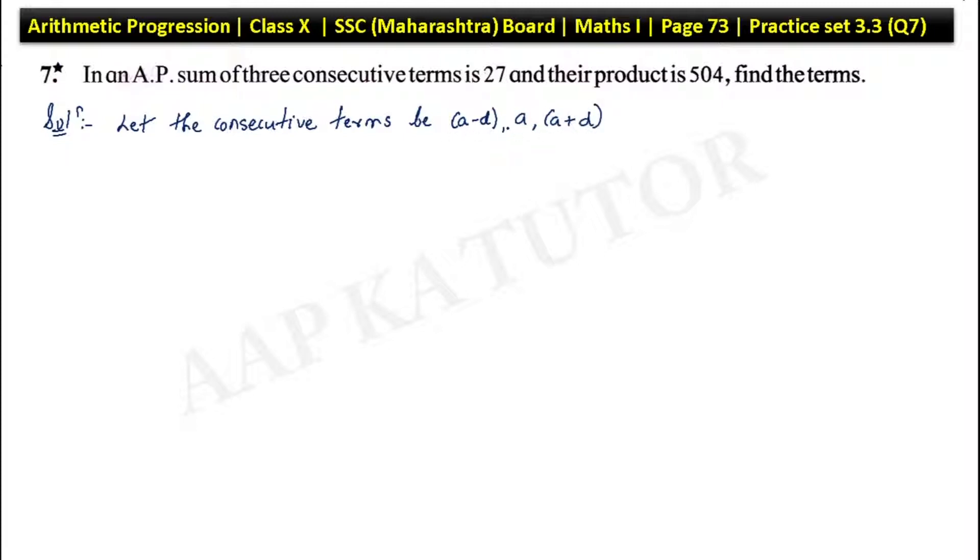Now, the justification for your teachers or other people is that you have to do an assumption. Let's incorporate it and see how to do it. Let the consecutive terms be a minus d, a, and a plus d. Now, as per given condition, sum of three consecutive terms is 27. So, this means a minus d plus a plus a plus d equal to 27.